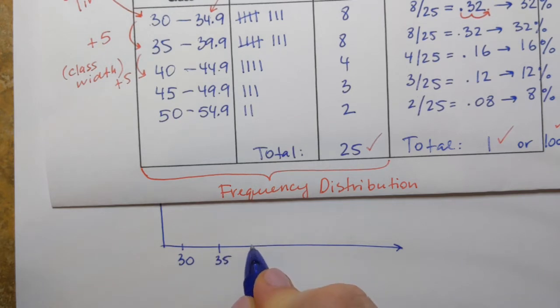Well with the lower class limits we know that it's exactly how it will work because we use the class width to come up with the lower class limits, right? So the difference here is always 5. 30, 35, 40, 45, 50.